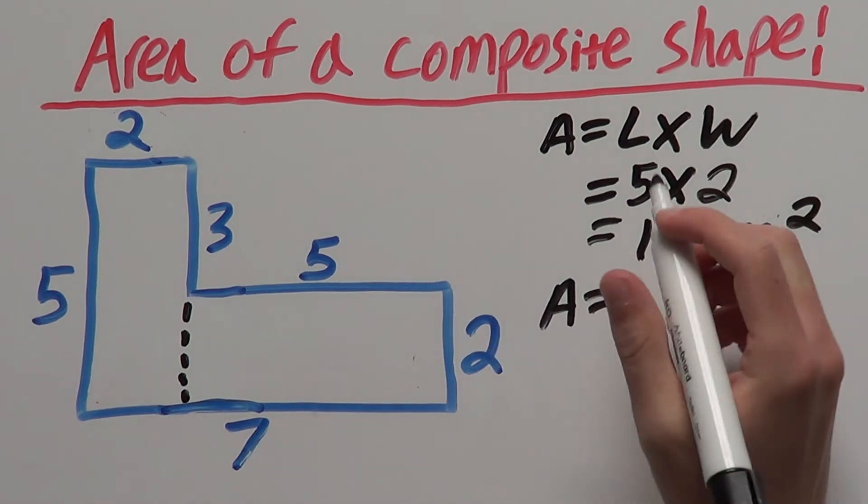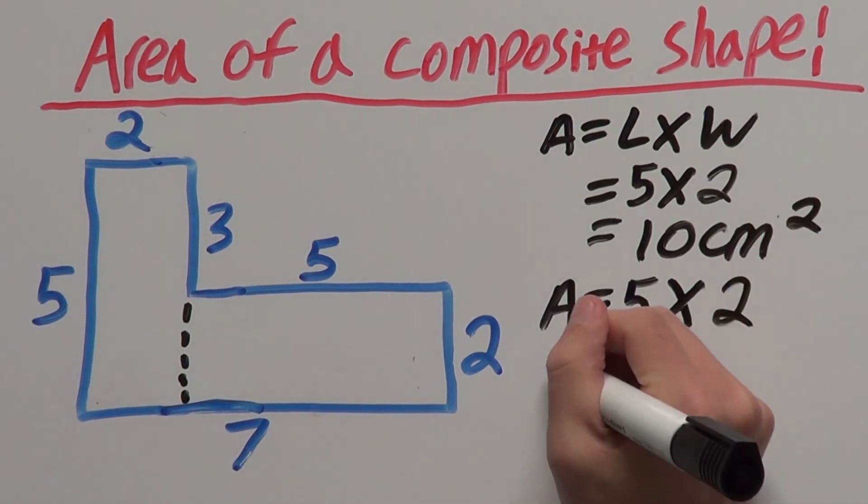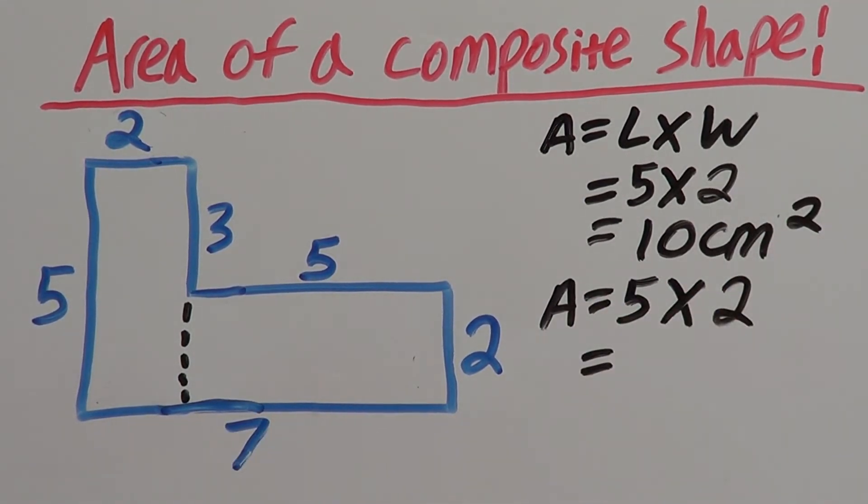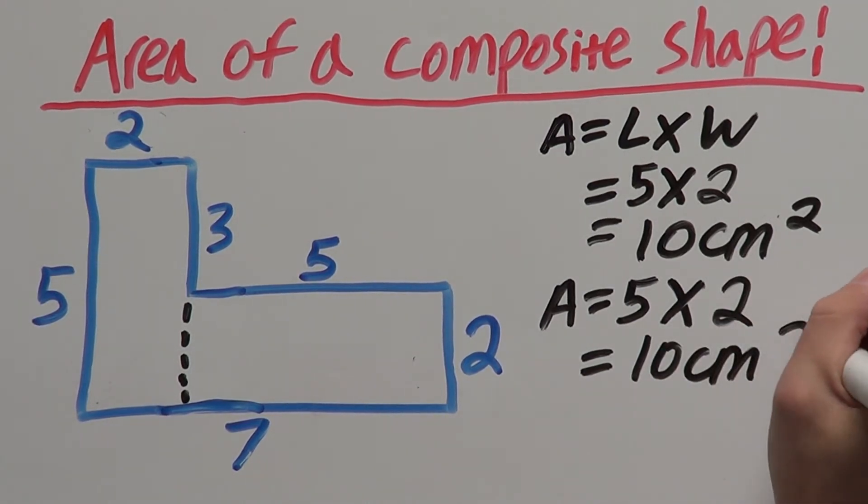So, we do length which is five times our width which we can see is two. That gives us our area of this rectangle to also be 10 centimeters squared.